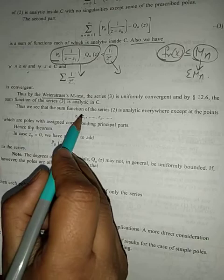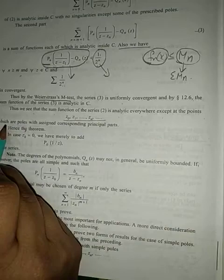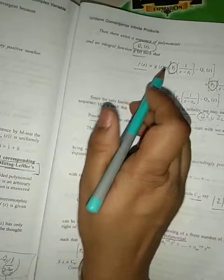So we see that the sum function of the series is analytic everywhere except at the points which are the poles and we can write the sequence as the f(z) as g(z) plus this series.